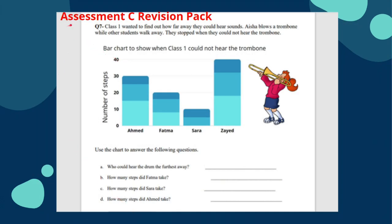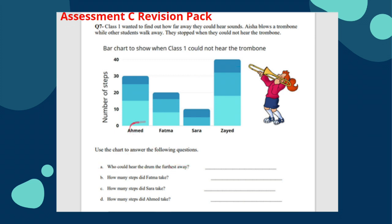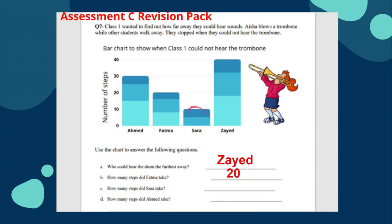Question seven: Class 1 wanted to find out how far away they could hear sounds. Aisha blows a trombone while others walk away, stopping when they could no longer hear it. The bar chart shows how many steps each student took. Zayed could hear it the furthest — 40 steps. Fatima took 20 steps. Sarah took 10 steps. Ahmad took 30 steps.